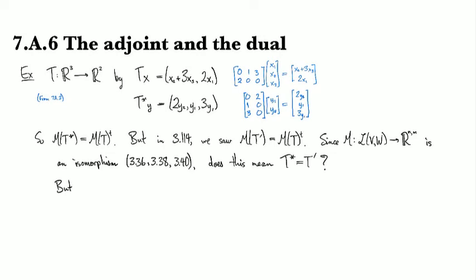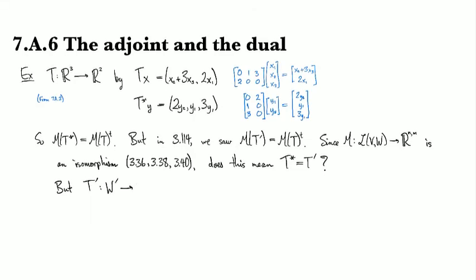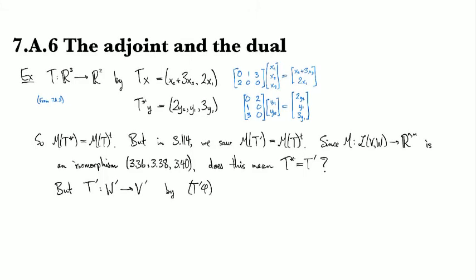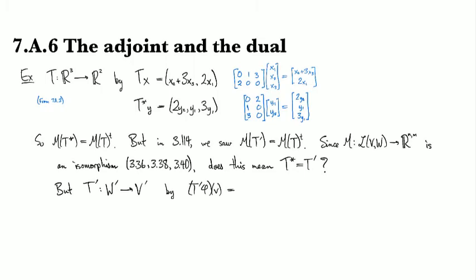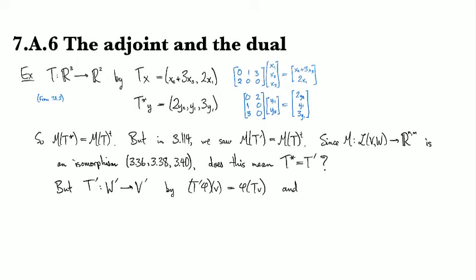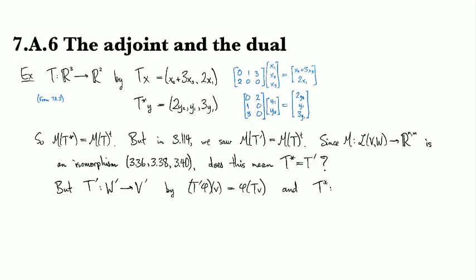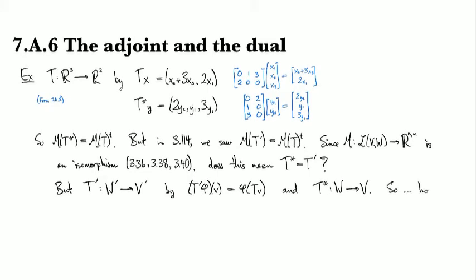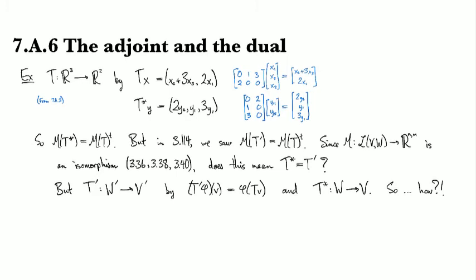Because we know that t prime is a map from the dual of w to the dual of v. And the way that it works is that t prime of a functional applied to the element v is obtained by precomposing by t. And t star is just going between different spaces. t star is straight up going from w to v, not from w prime to v.